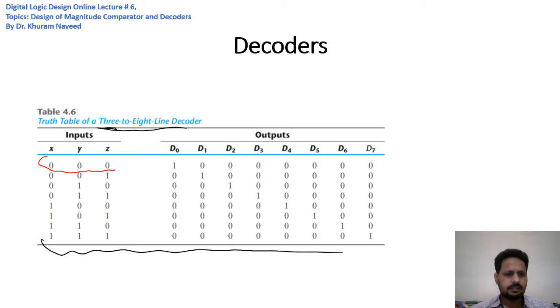correspond to a certain quantity. For example, 000 corresponds to D₀, while 001 corresponds to D₁, and 010 corresponds to D₂, and so on.